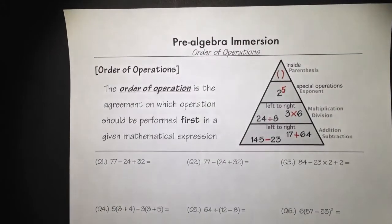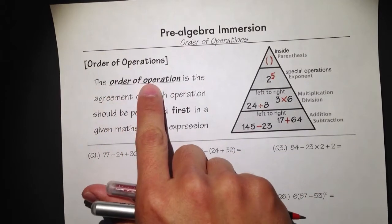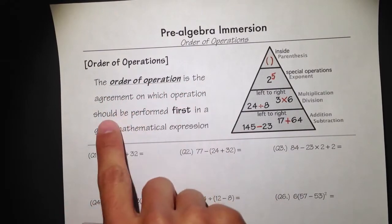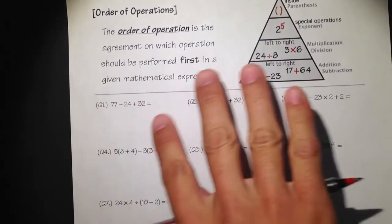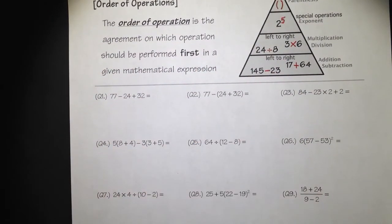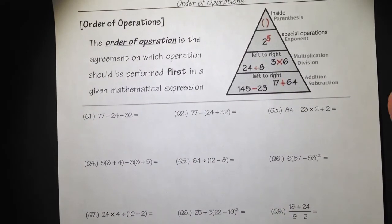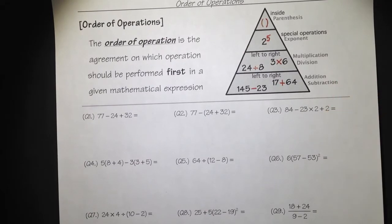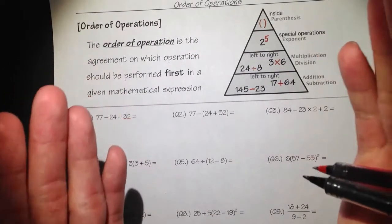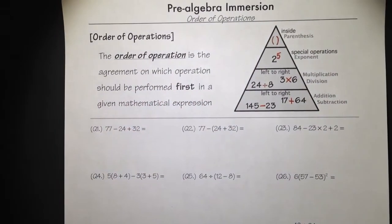I want to talk about the order of operations today. When we are dealing with math questions — calculation questions — we often deal with a couple of operations in a single calculation. The order of operations is the agreement on what operations should be performed first. You can see that several calculation questions involve additions, subtractions, exponents, parentheses, and things like that. What do we need to do first? That's exactly what the order of operations is.